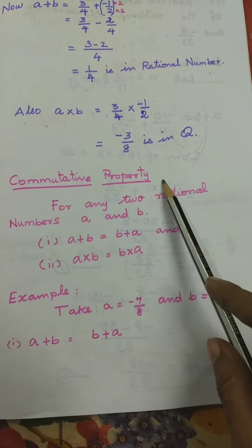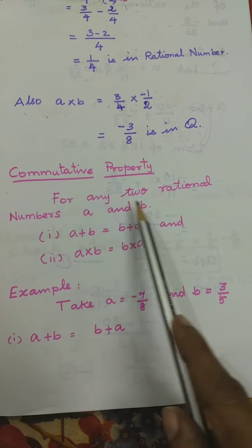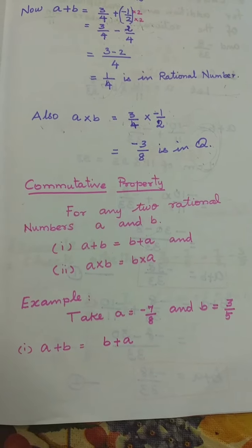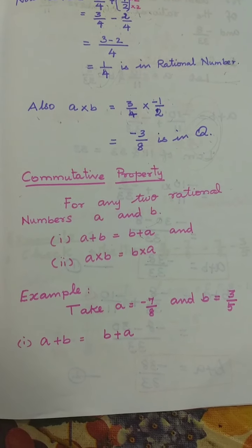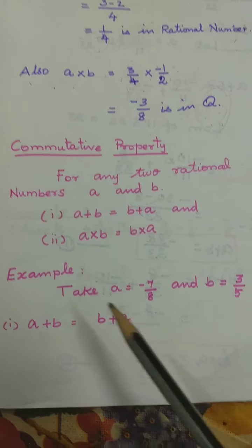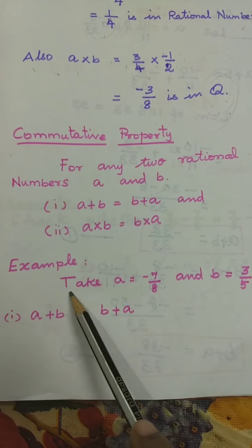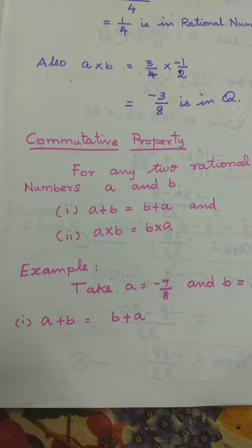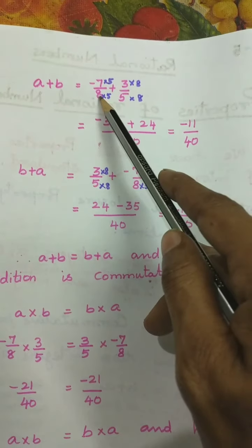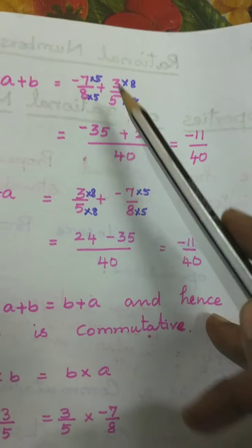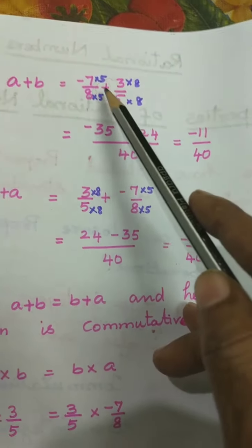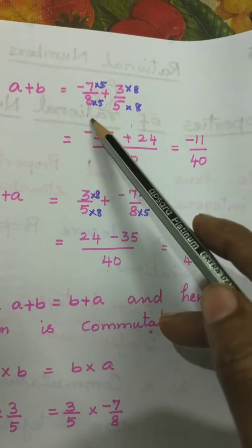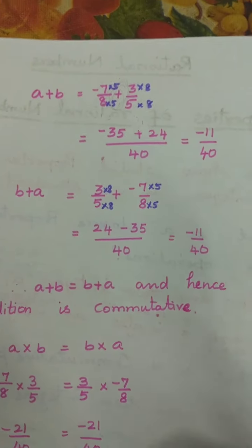Now we will see the commutative property for rational numbers. For any two rational numbers A and B, A plus B is equal to B plus A, and A into B is equal to B into A. We know that in commutative property, addition and multiplication are true. Now we shall prove by an example. Take A equal to minus 7 by 8 and B equal to 3 by 5. First, A plus B is equal to B plus A. A plus B equals minus 7 by 8 plus 3 by 5. Since the denominators are different, we have to see the LCM.